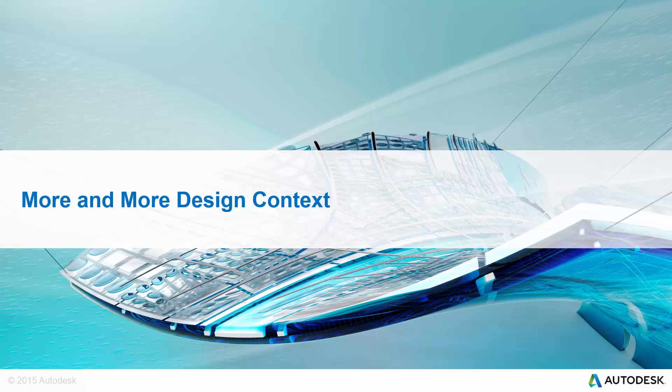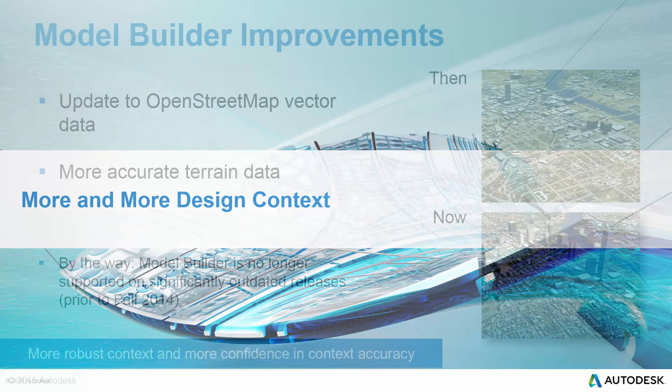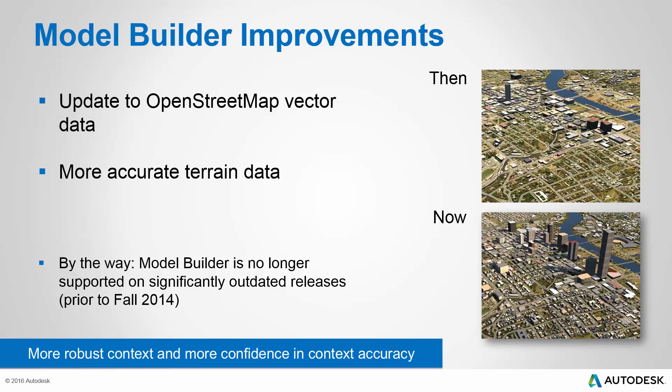Let's begin talking about how there's more and more design context capabilities in this latest release of InfraWorks 360. You'll enjoy some Model Builder improvements. You'll notice that the vector data coming from Model Builder, with an update to the OpenStreetMap data store for this service, is more accurate and more dense than ever before. Take a look at the sample images from an old InfraWorks 360 model created with Model Builder in the same area with the newly available Model Builder data. Big difference — much more dense data available.